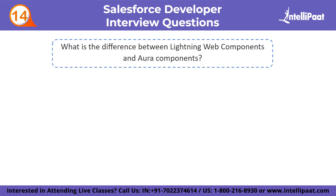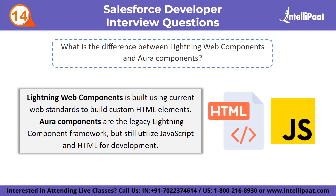Fourteenth question: what is the difference between Lightning Web Components and Aura components? Lightning Web Components is built using current web standards to build custom HTML elements. It is used to create reliable and flexible single-page UI-based apps for desktop and mobile. The new model provides unmatched performance and coexists with the Aura components concept. Aura components are the legacy lightning component framework but still utilize JavaScript and HTML for development. Aura gives developers the ability to create apps not dependent on Salesforce data, representing reusable sections of the UI.